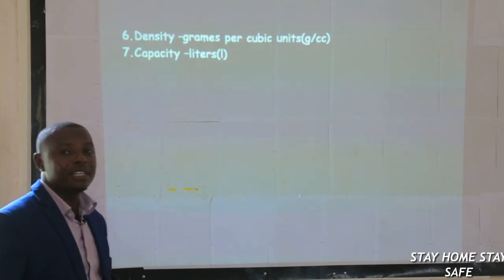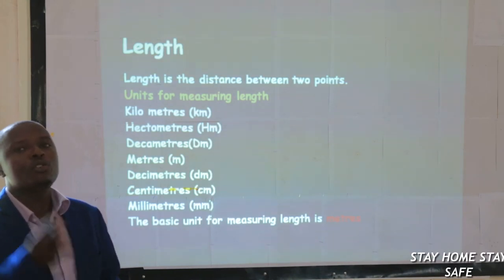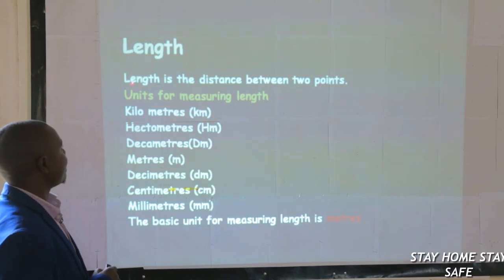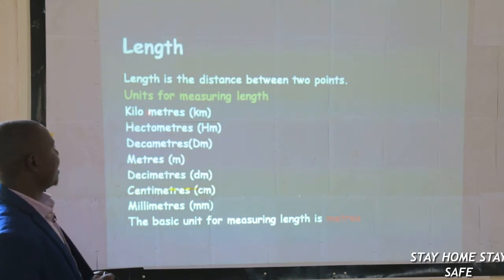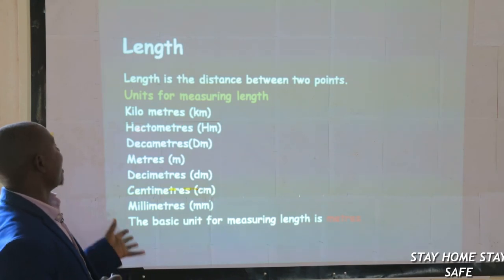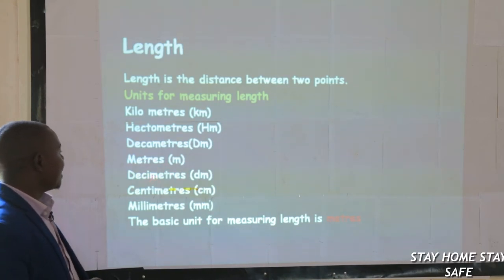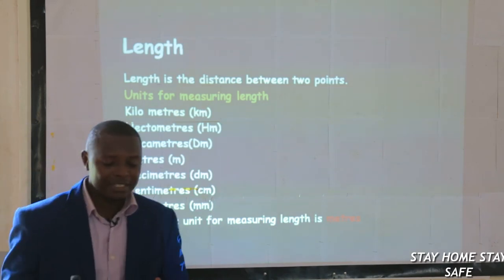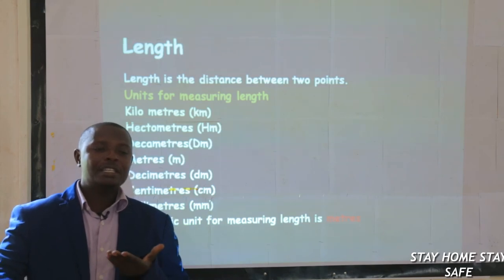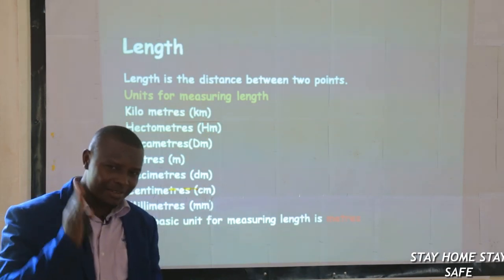And then we have length. What is length once again? Length is the distance between two points. The units for measuring length, beginning from the longest: kilometers, then hectometers, decimeters, meters, decimeters, centimeters, and then millimeters. All of these units can measure length, but the basic unit remains meters.